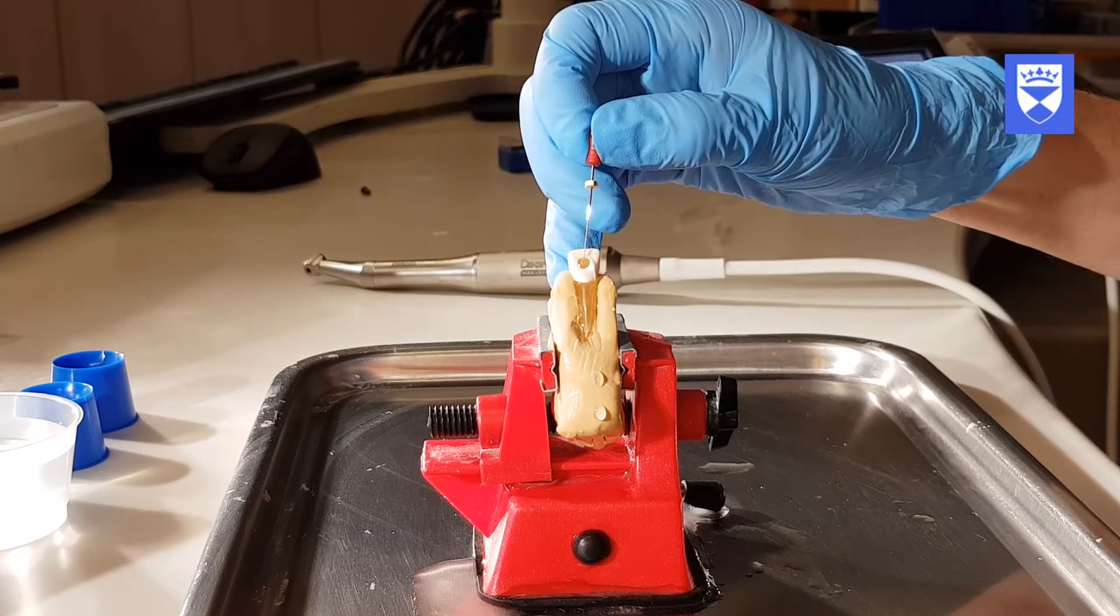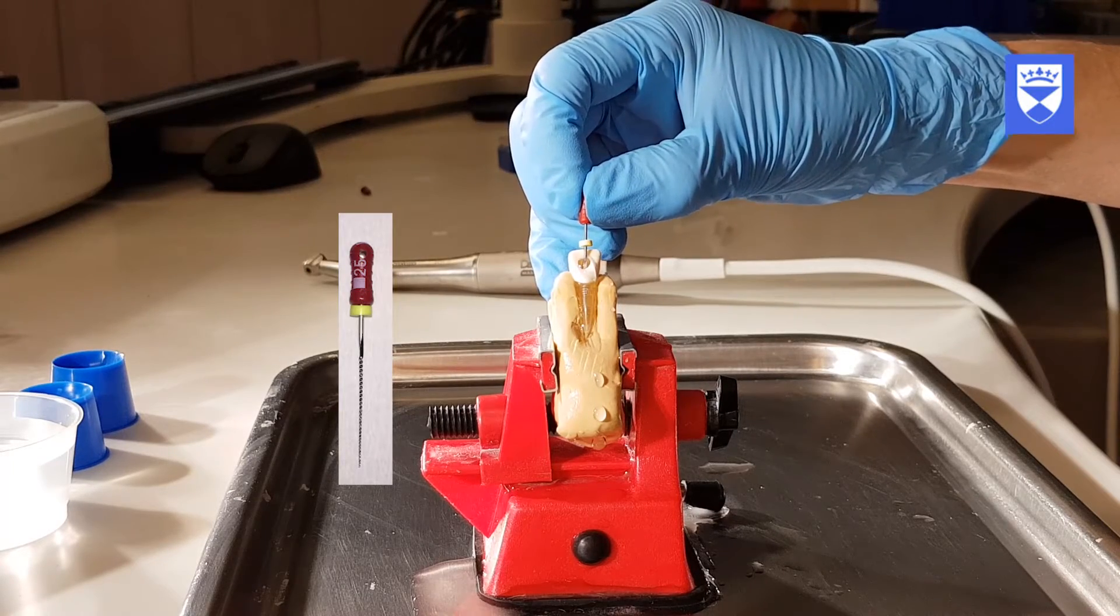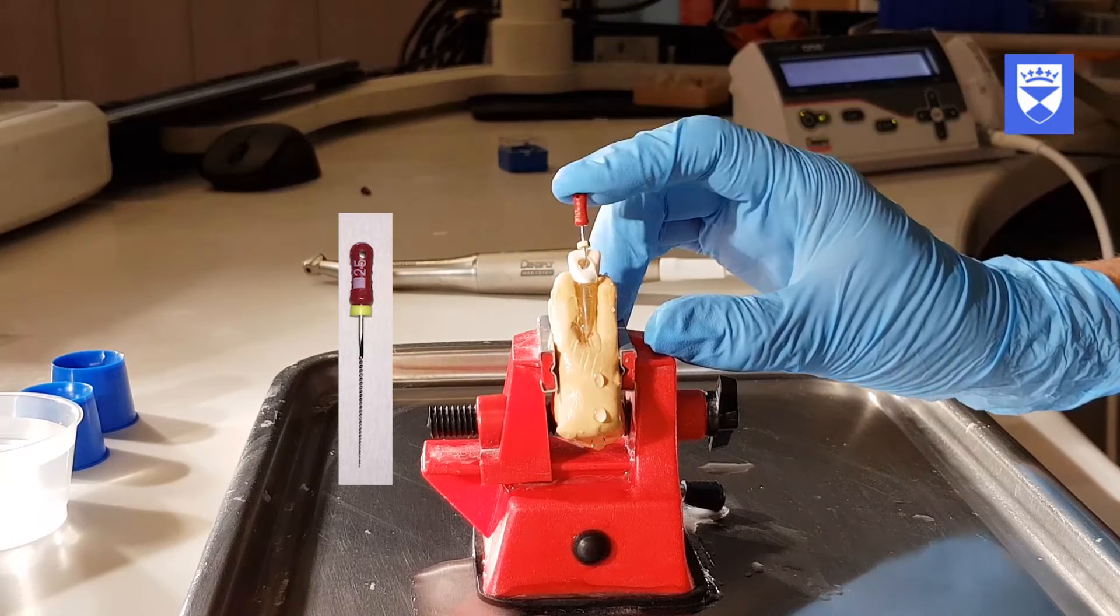When apically gauging with the size 25 flexofile, it is still passing the apical constriction, indicating that the F3 file should be used.